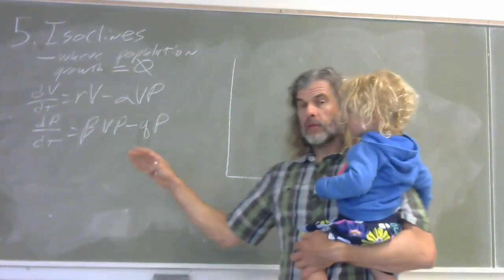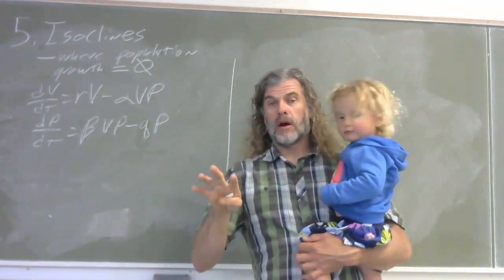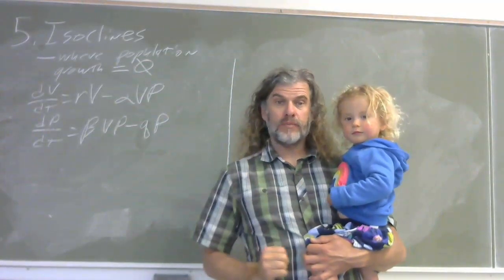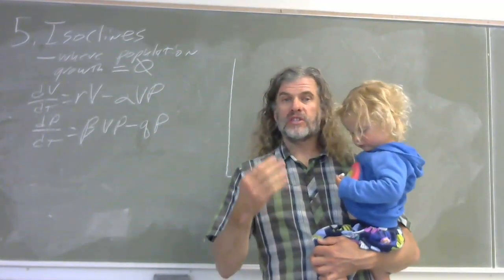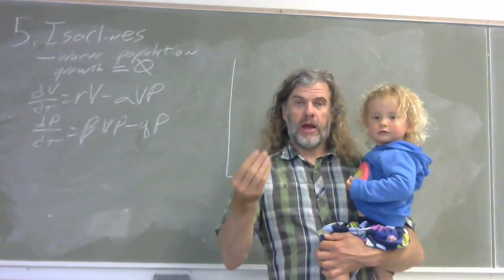Now, we're going to use isoclines in models that have more than one species. And let's go to our simplest two species model, which is predator-prey interactions.